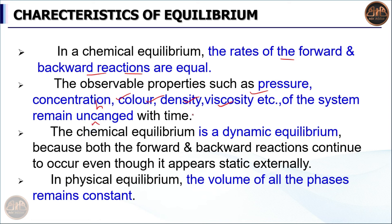If you measure any parameters while the system is in equilibrium state, they will show no change. Third, chemical equilibrium is a dynamic equilibrium. 'Dynamic' means changeable — the reason is that both the forward and backward reactions continue to occur, even though the system appears static externally.